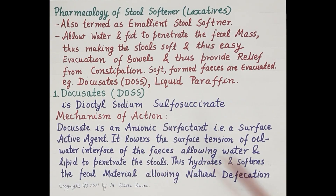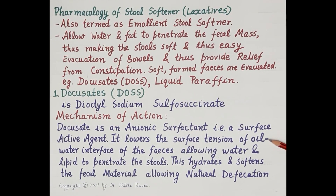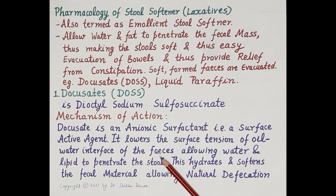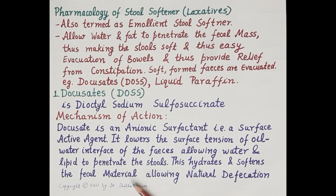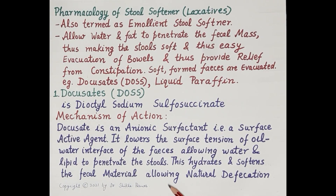Regarding the mechanism of action of docusates: docusate is an anionic surfactant, that is, a surface active agent. It lowers the surface tension at the oil-water interface of the feces, and this allows water and lipid to penetrate the stools. Water and oil hydrate and soften the fecal material, allowing natural defecation, that is, removal of feces from the colon and rectum.